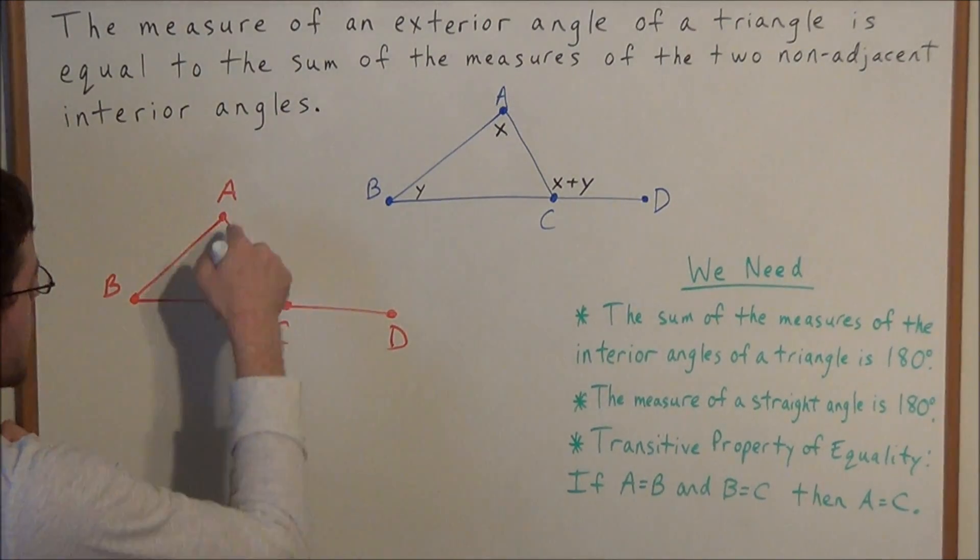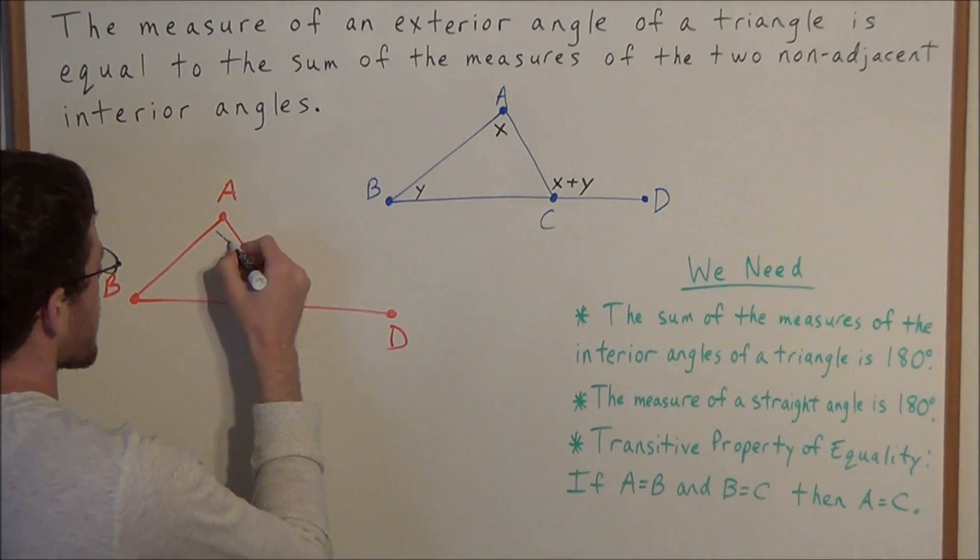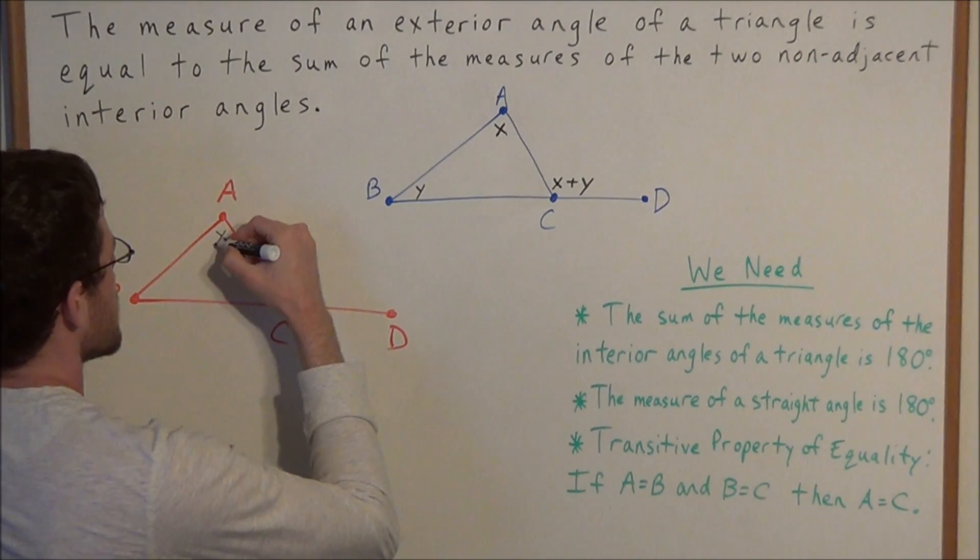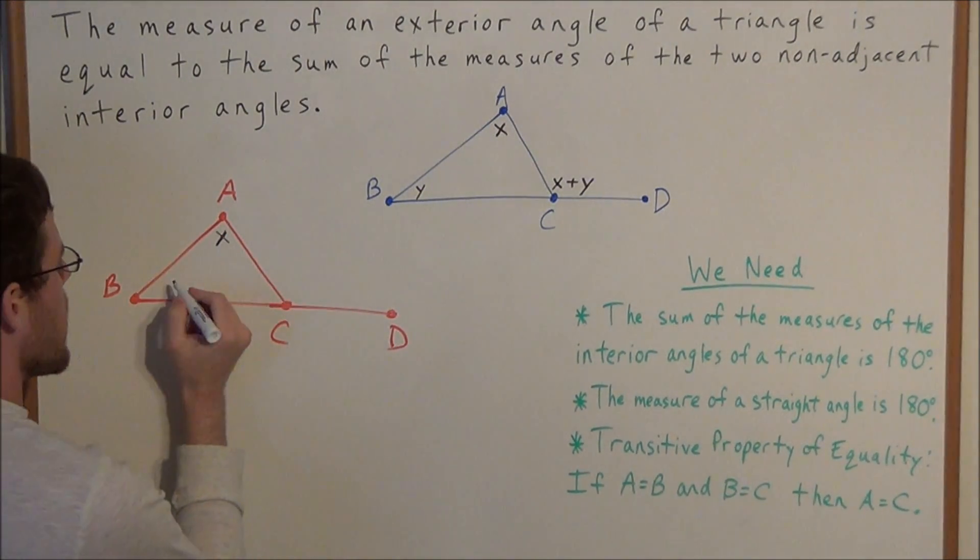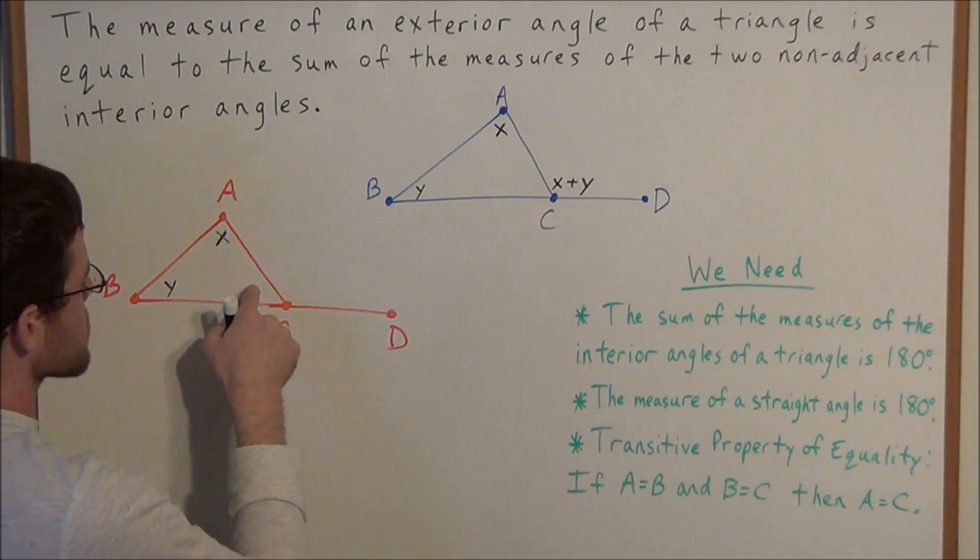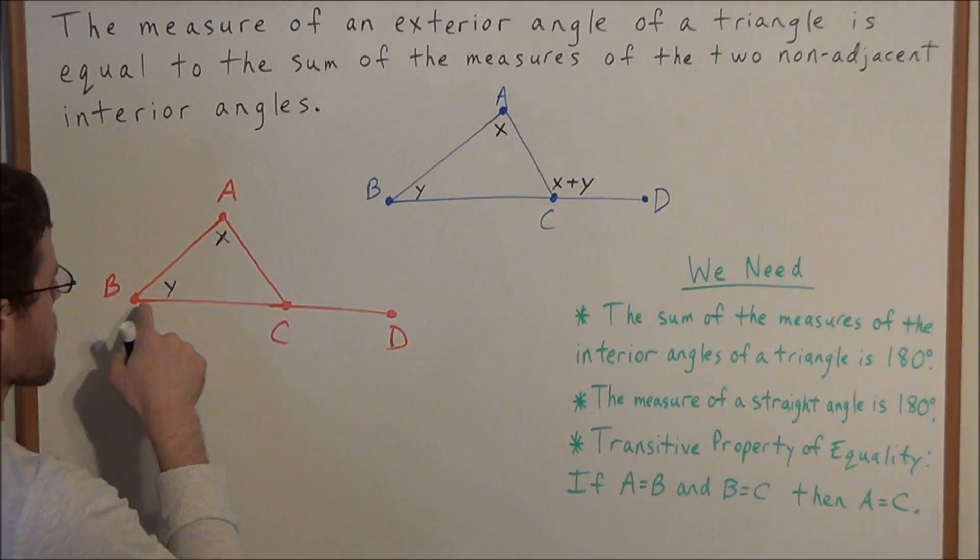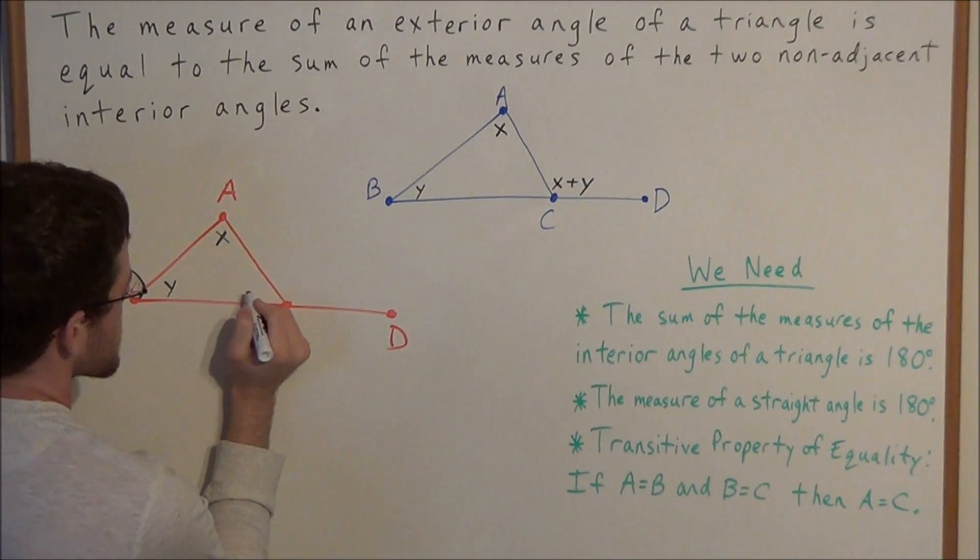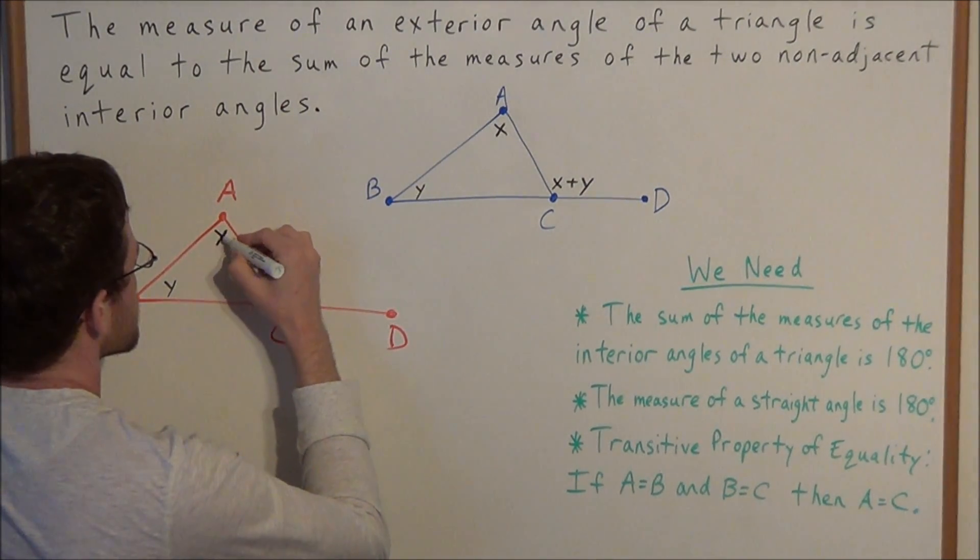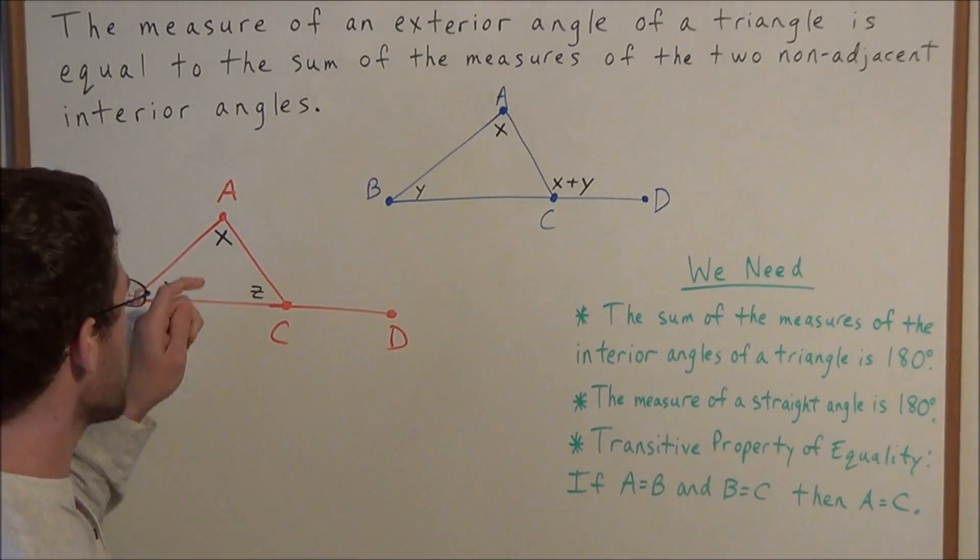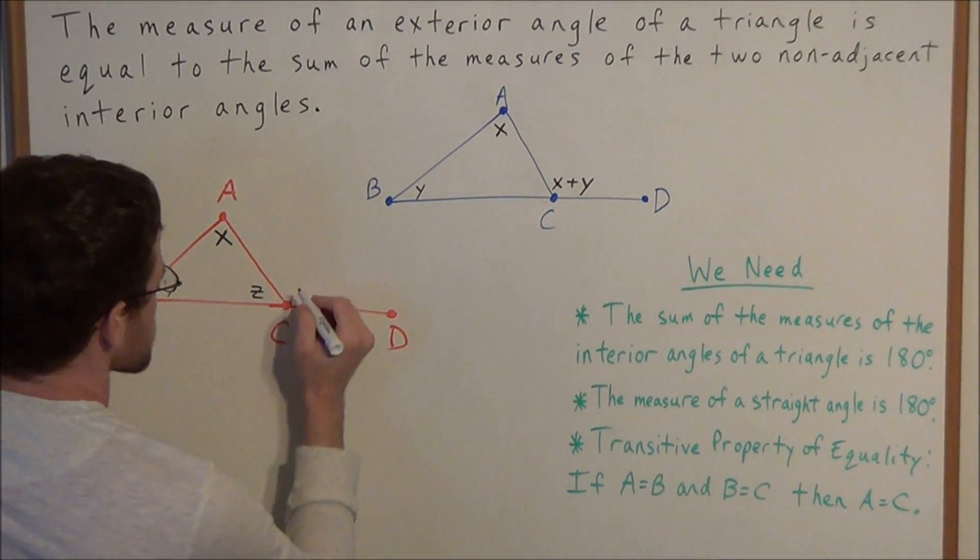Now we could name the four angles involved in this problem. Let's say the measure of angle A, we'll call the measure of angle A X, and the measure of angle B we could set equal to Y. We could set the measure of angle C, the measure of angle BCA, equal to Z.